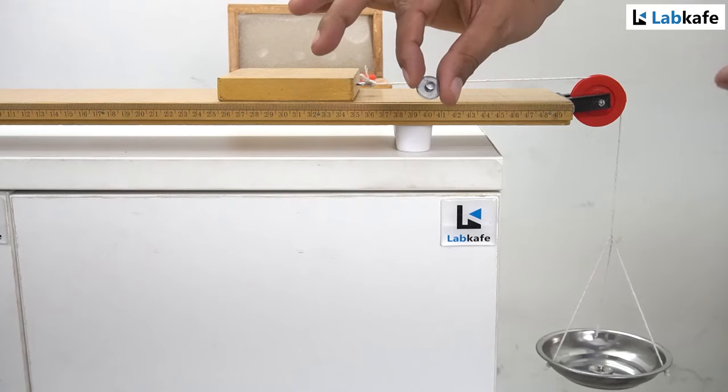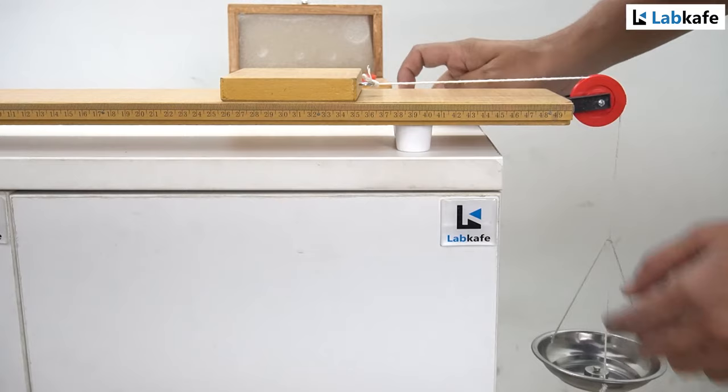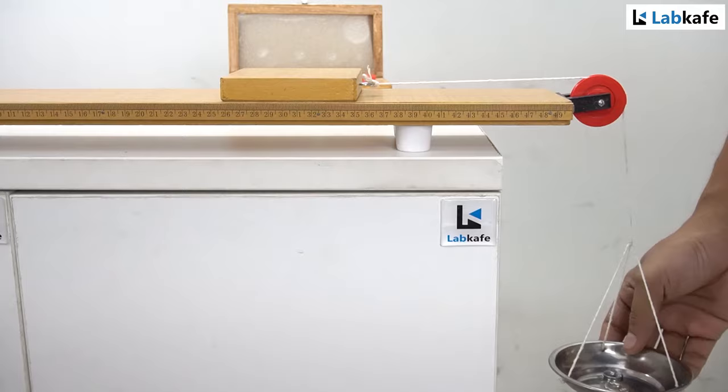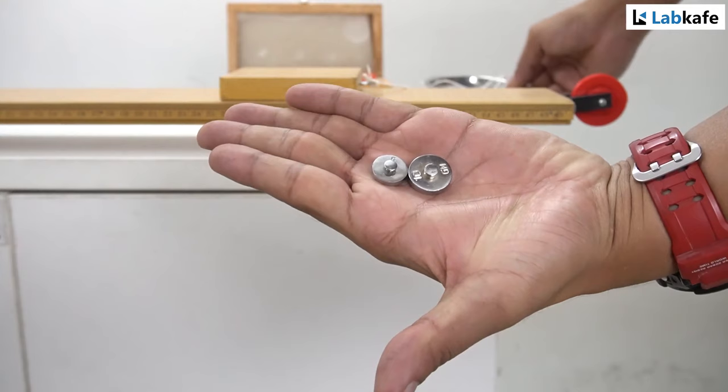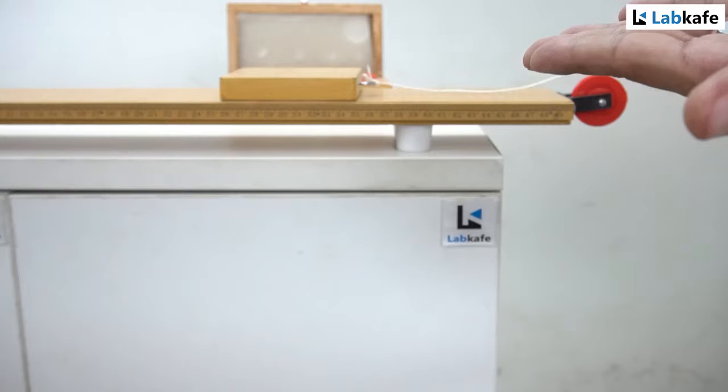Now I will take back both two gram weights and add 5 grams and tap. The wooden block has just moved. Because of the non-uniform surface, the movement has stopped after it started. That's okay.